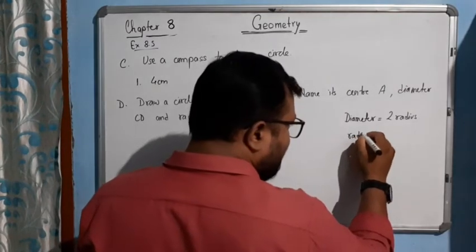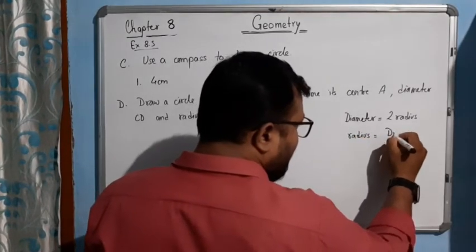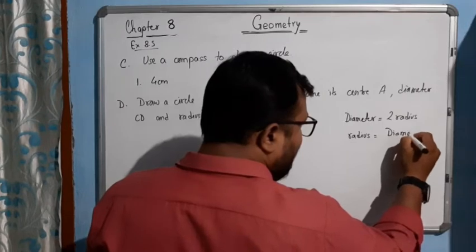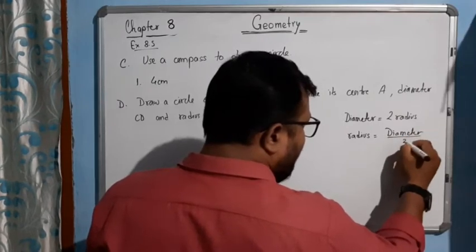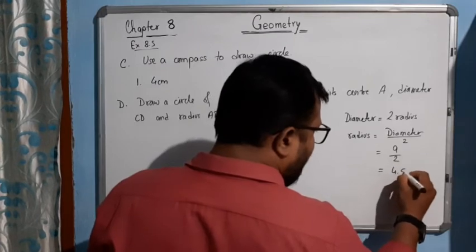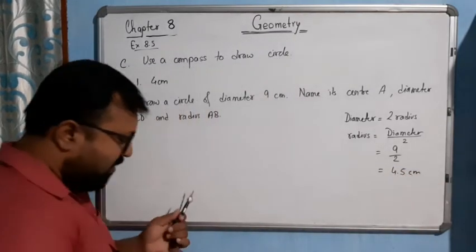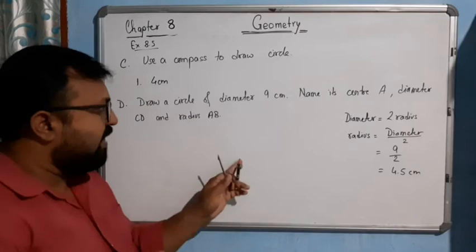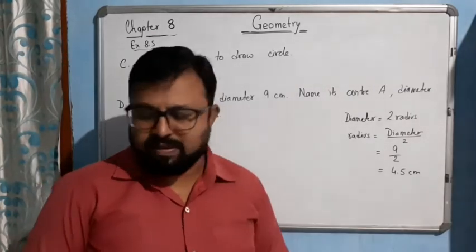So radius will be how much? Radius is equal to what? Half of diameter or not? Half of diameter, diameter is 9, 9 by 2, it will be 4.5 centimeter. The radius will be 4.5 centimeter.